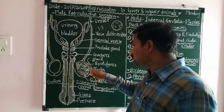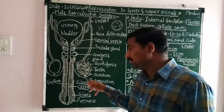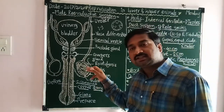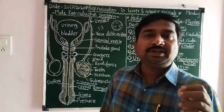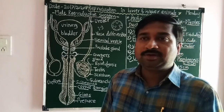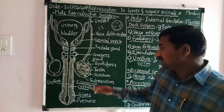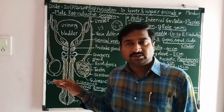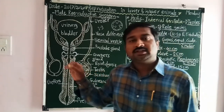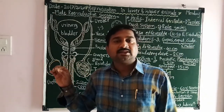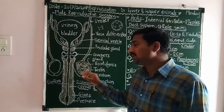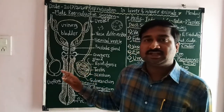The dartos muscles are attached to the scrotum wall through fibromuscular bands called the gubernaculum. Due to the presence of dartos muscles, the scrotum acts as a thermoregulator. The testis requires a temperature 2 to 3 degrees centigrade less than body temperature in order to produce sperm, and the scrotum regulates this temperature.